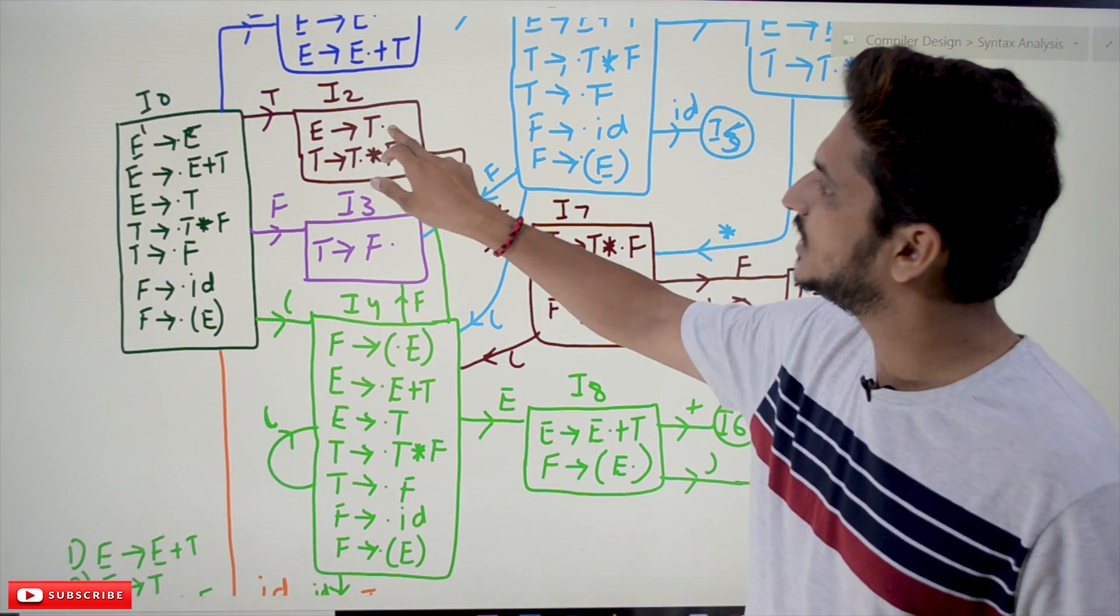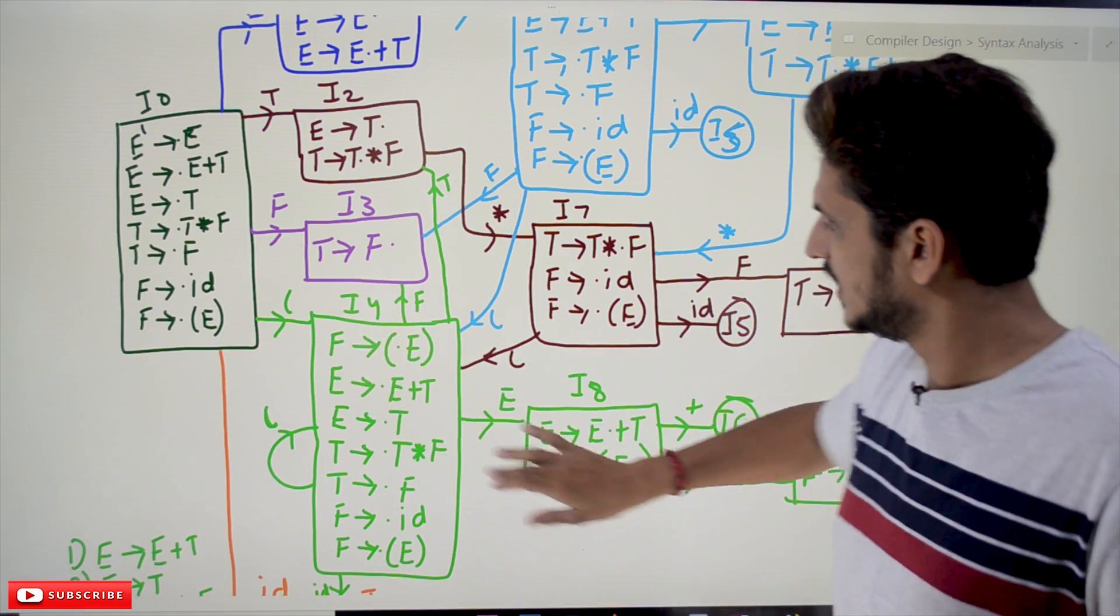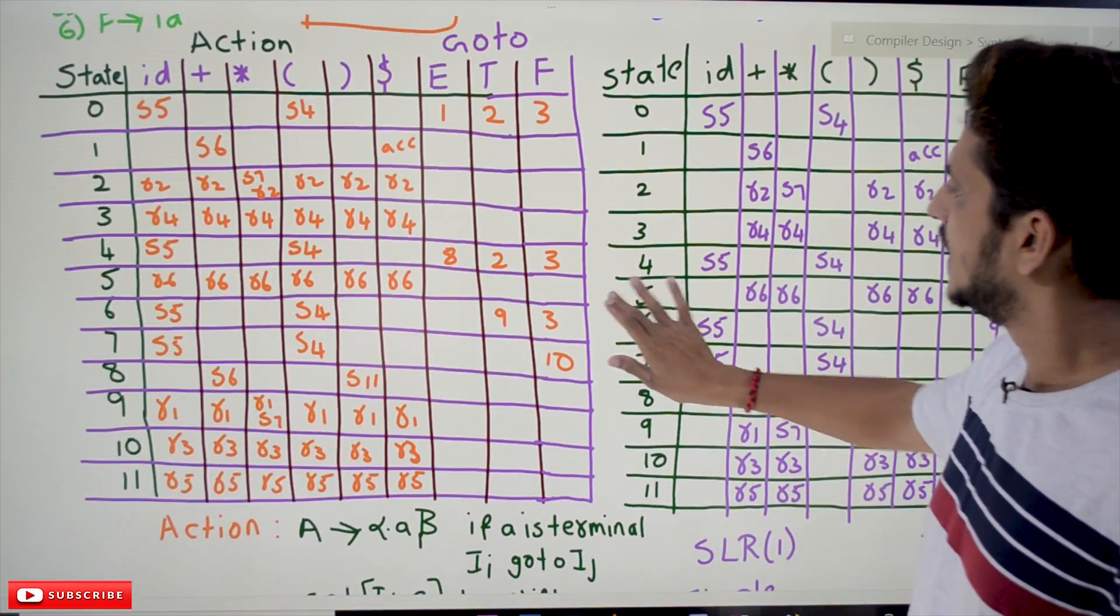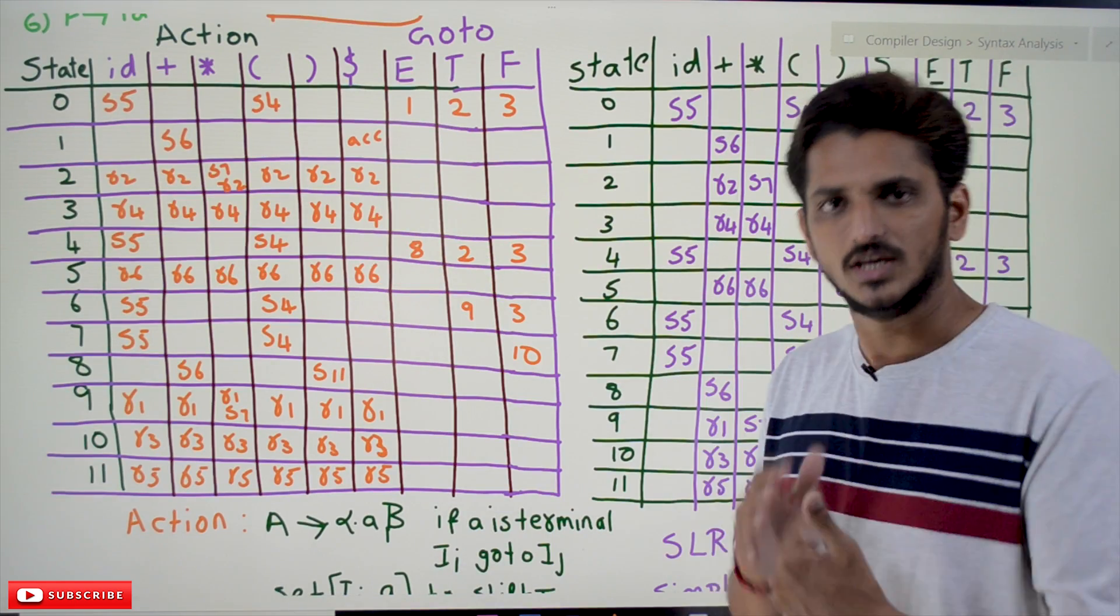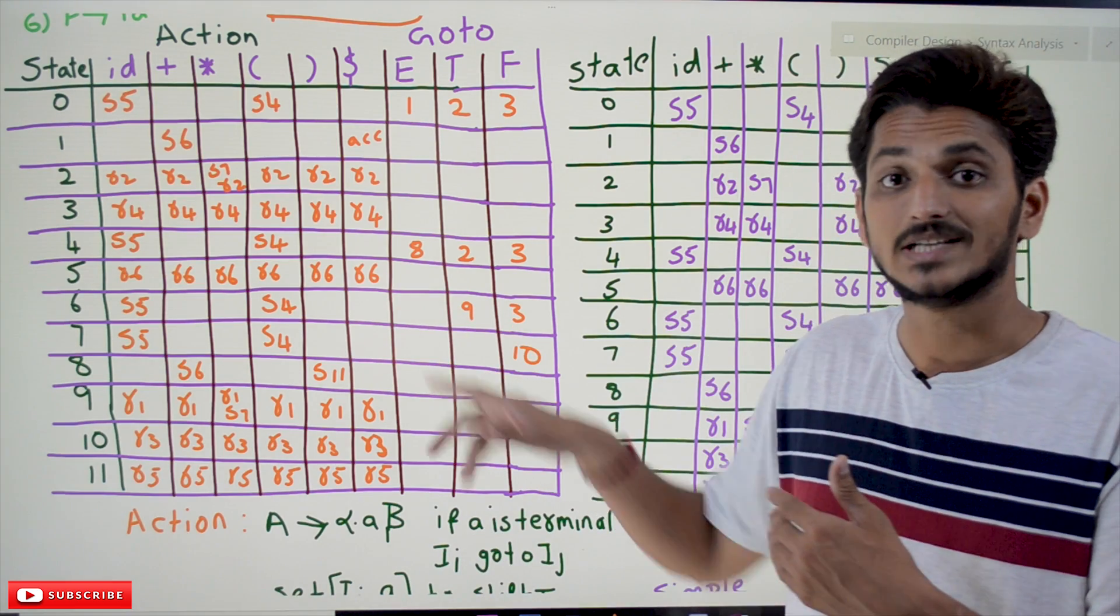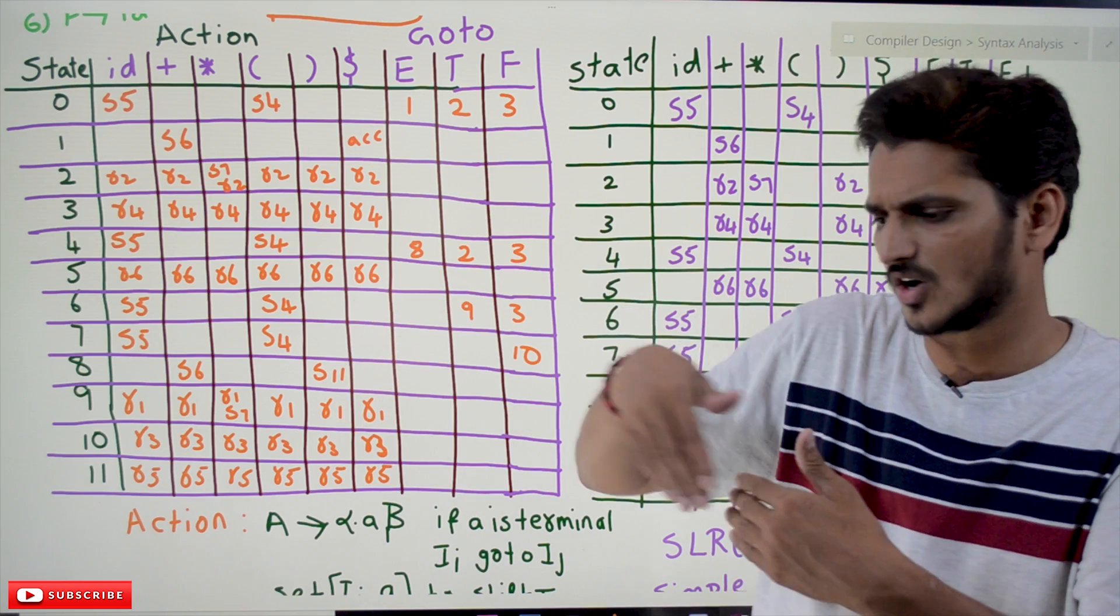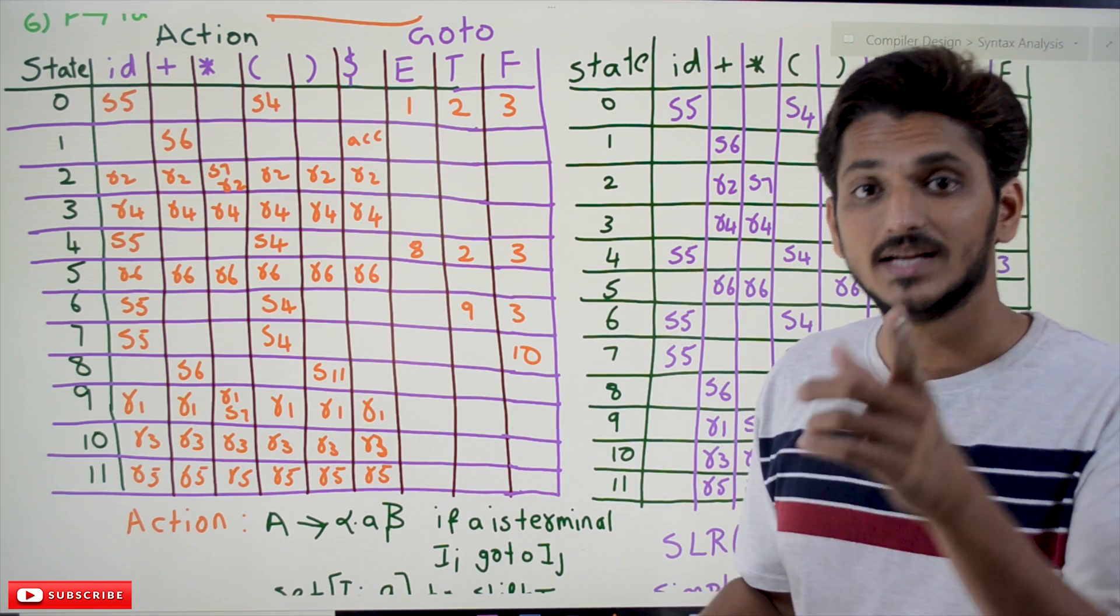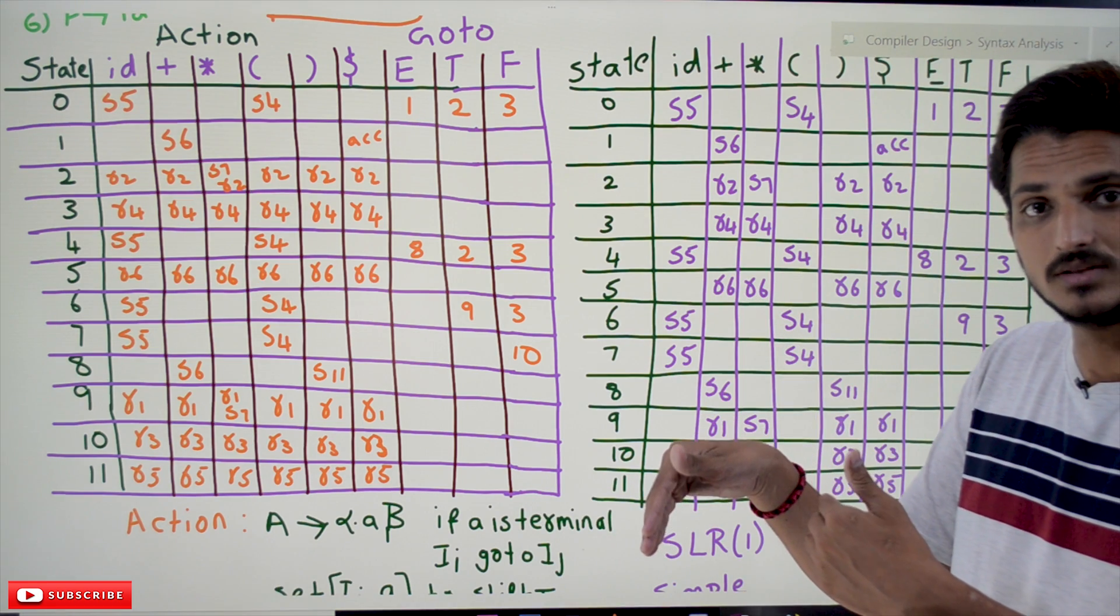For E tends to T dot, we place reduce action only on the follow symbols of E. The difference is: here we are saying reduce to E whatever the next symbol is, we don't care about that. That's why it's got the name LR(0) - zero look ahead. We are not considering the next input symbol.